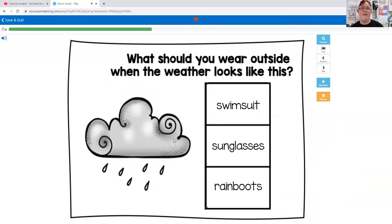What should you wear outside when the weather looks like this? Swimsuit, sunglasses, or rain boots? Well, you're probably not going to wear your swimsuit. Probably not going to wear sunglasses because there's no sun. But you might wear your rain boots.